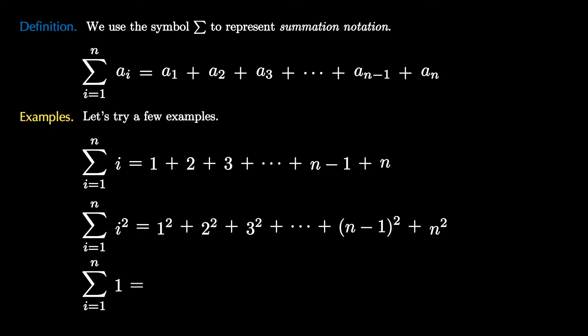Notice we can even do this with a constant sequence. So we can sum 1, where i goes from 1 to n, by just adding 1 over and over again. Notice that the 1 doesn't depend on the index. So when i is 1, we add 1. When i is 2, we add 1. When i is 3, we add 1. And we just keep adding 1 until we get to i equals n, so that we've added up n copies of 1. This is just a representation for the number n.